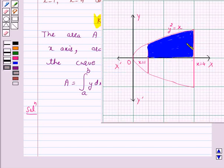Now, this shaded region is the region bounded by the curve y² = x and the lines x = 1 and x = 4 and the x-axis.